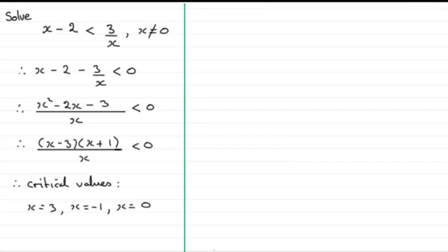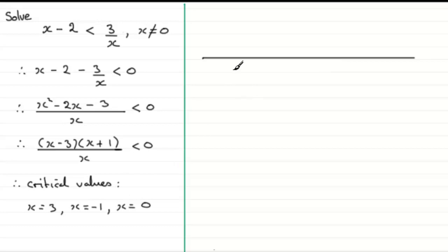Now I form a number line with those critical values on it. To the far left we have minus 1, then 0, then 3. This gives us four regions on the number line. It's not drawn to scale — that doesn't matter — it just creates these regions.